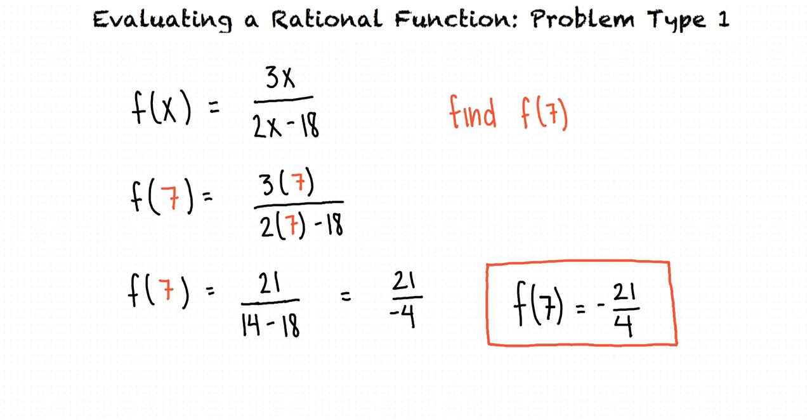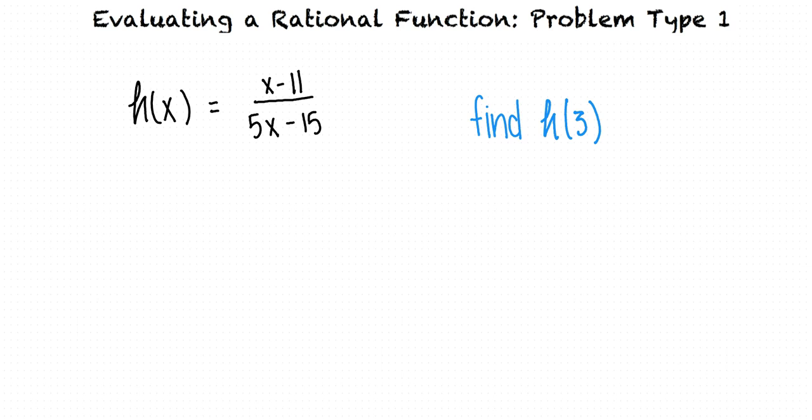Why don't we take a look at another example? Given the function h of x equals x minus 11 over 5x minus 15, find h of 3. Where do you think we should start?